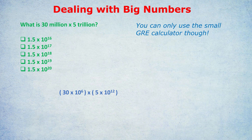First, let's multiply the numbers on their own — ignore the exponents for a moment. 30 times 5 is 150. Now the exponents: 10 to the 6 times 10 to the 12. When you multiply two numbers with the same base, you add the exponents. So 10 to the 6 times 10 to the 12 equals 10 to the 18. That's something you need to know when dealing with scientific notation.